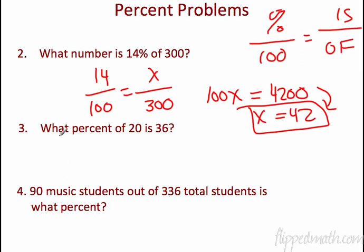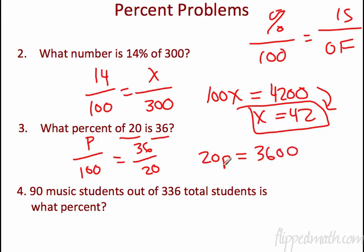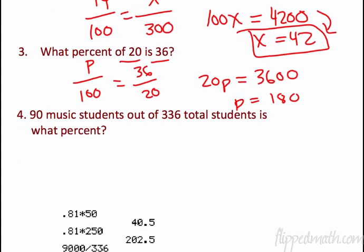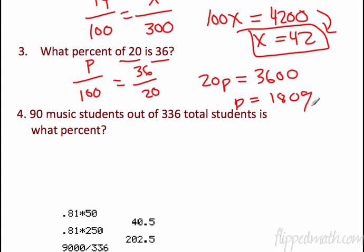Next one, what percent? We don't know the percent. So we're going to get a, I'll put a P over 100 for percent. I always like to use P so when I get to the end, I don't forget my percent sign. It's of 20 and is 36. So it's 36 over 20. So 20P will equal 3,600. If I divide both sides by 20, P will equal 180. Easy enough. Not done yet. Percents. Remember I used P so I wouldn't forget.